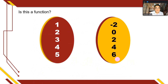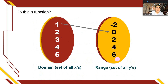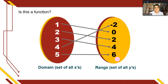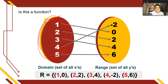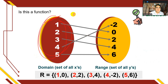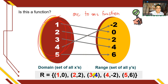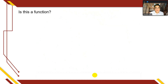For arrow diagrams: rewrite the pairs as (1,0), (2,2), (3,4), (4,-2), (5,6). There are no repeated first elements, so this is a function. This is specifically called a one-to-one function because each x-element is paired to a unique y-element — no repeated x-values and no repeated y-values.